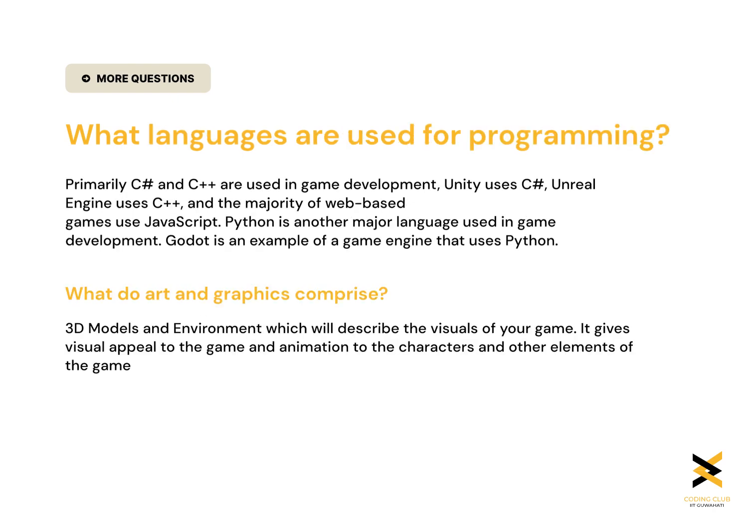So what languages are used for programming? We need to first ask what those languages are used for. They handle the interactions of the players with the environment and can modify the game's UI. Suppose you want to add an interaction where a player does an action and some other event happens — you will use programming to make the game understand that. Primarily, C Sharp and C++ are used in game development. Unity makes use of C Sharp, Unreal Engine uses C++, and the majority of web-based games use JavaScript. Python is also one of the major languages used in game development. Godot is one of the game engines that makes use of Python.